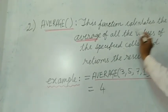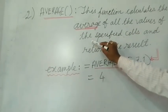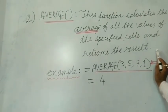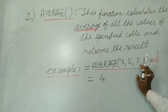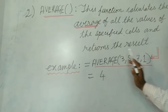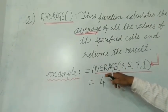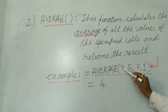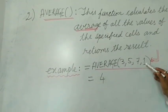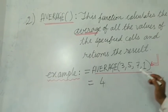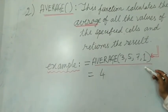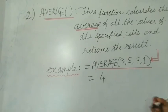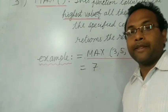The second function is AVERAGE. This function calculates the average of all the values of the specified cells and returns the result. It can calculate the average of a row or a column. Example: =AVERAGE(3, 5, 7, 1) — press Enter. MS Excel will add them (sum = 16) and divide by 4 because there are four numbers, so the answer is 4.